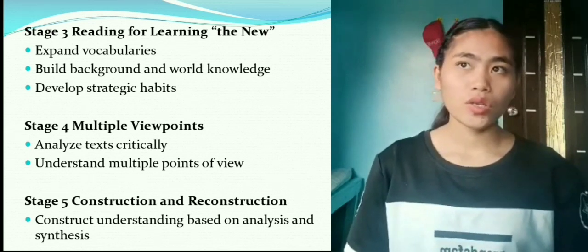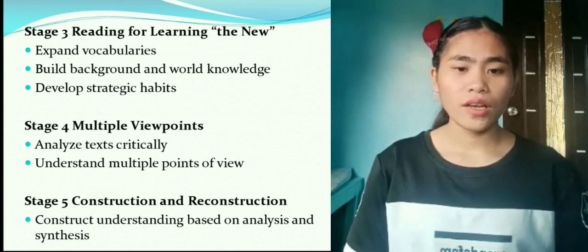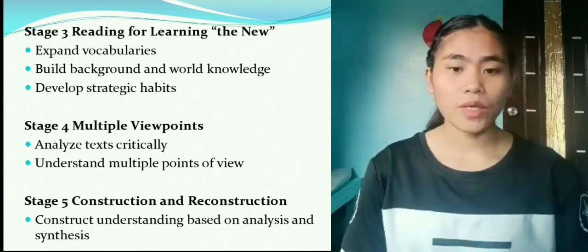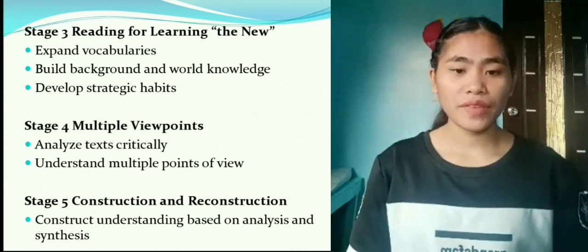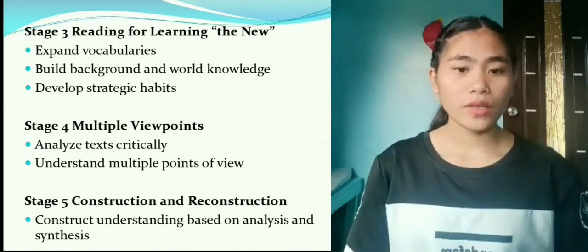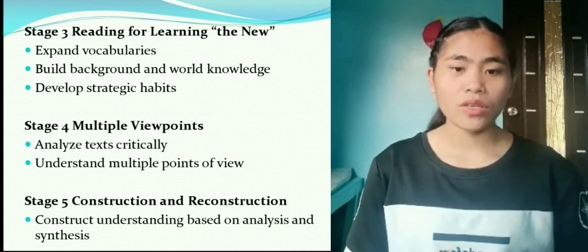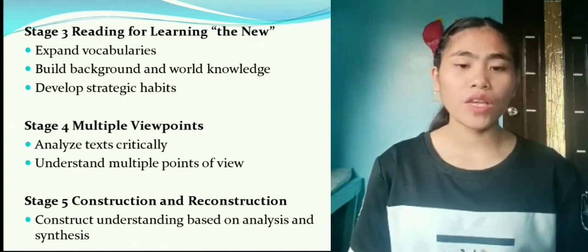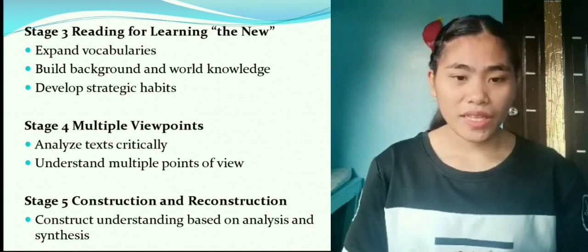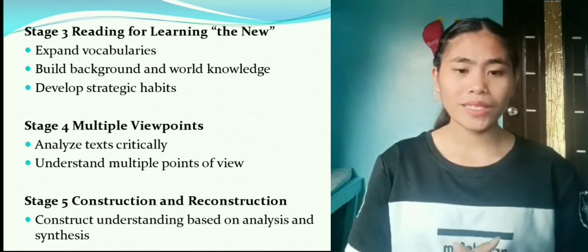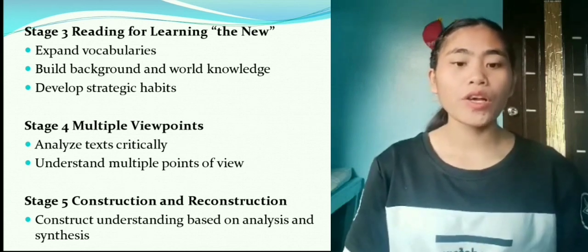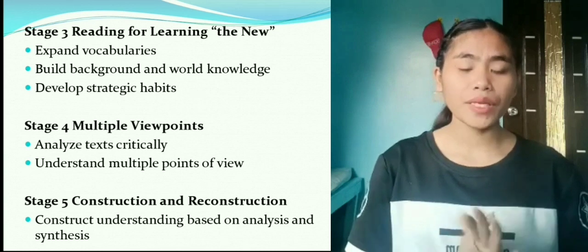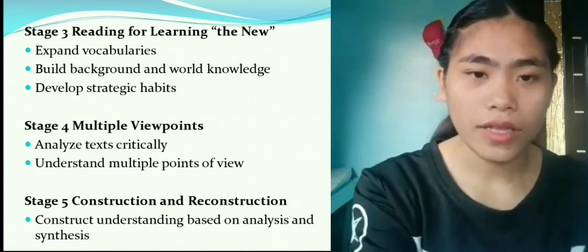Stage 5 is for ages 18 and above. When Stage 5 is reached, one has learned to read certain books and articles in the degree of detail and completeness that one needs for one's purpose, starting at the end, the middle, or the beginning. That's all. Thank you.